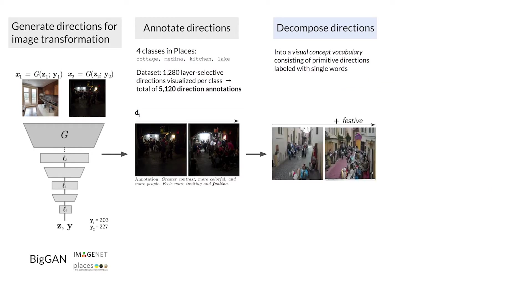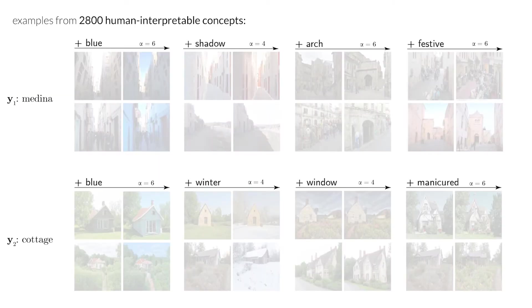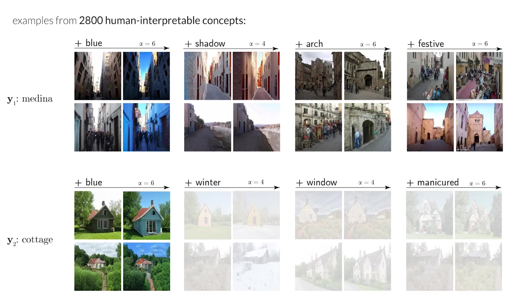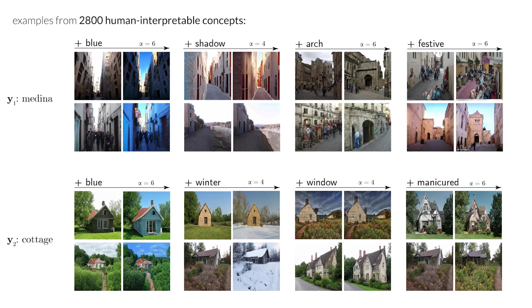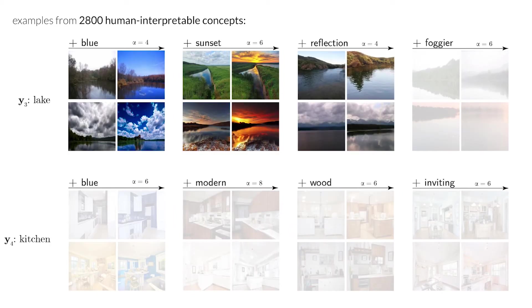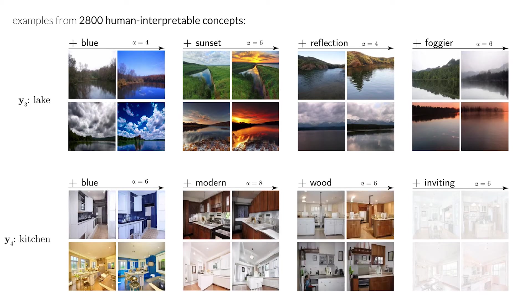Applying this process to our annotation dataset yields 2,800 distinct visual concepts. Here are just a few examples of the concepts in our vocabulary, which span color and light, objects, structures, and seasons, and importantly, experiential attributes of a particular image class, such as making a lake foggier or a kitchen more modern.